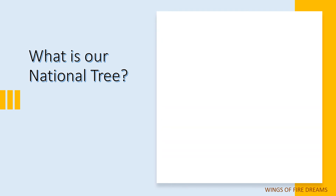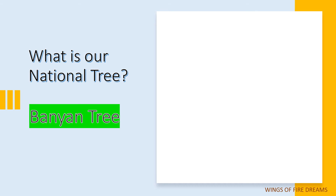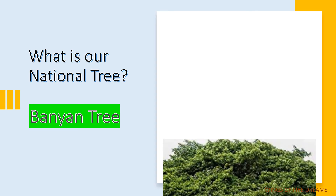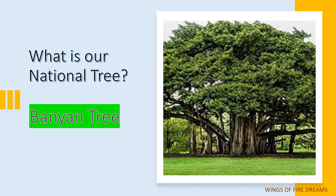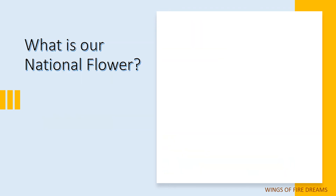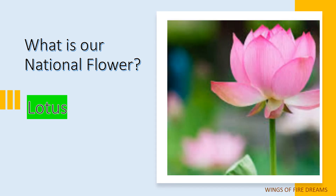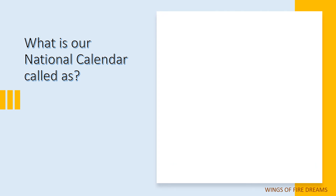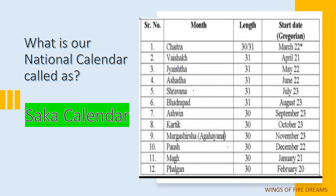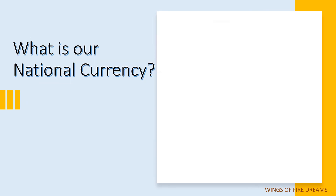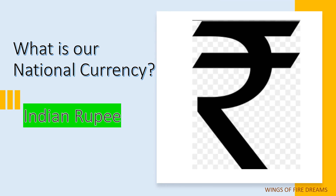What is our national tree? Banyan tree. What is our national flower? Lotus. What is our national calendar? Saka calendar. What is our national currency? Indian rupee.